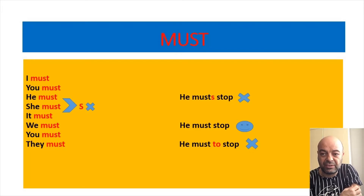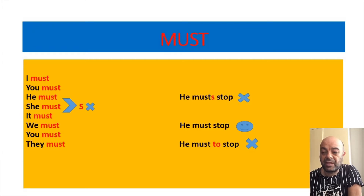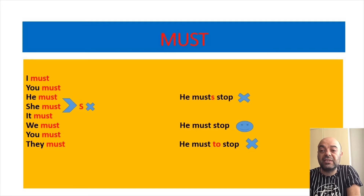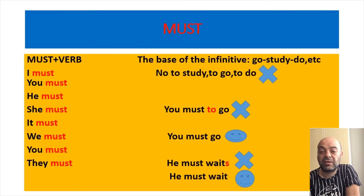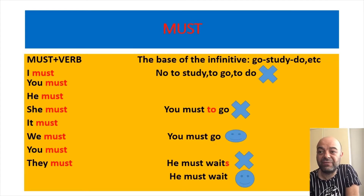A wrong sentence would be 'he musts' — the correct one is 'he must'. You don't need to add 's'. Also incorrect is 'he must to stop' — 'to' is wrong after must. The pattern is: must plus base verb. I must, you must, he must, she must, it must, we must, you must, they must.